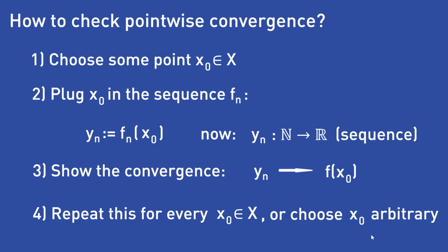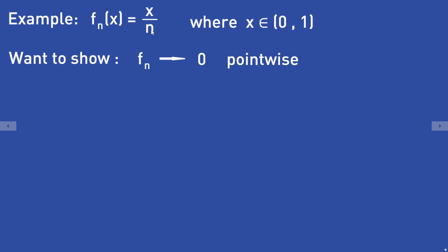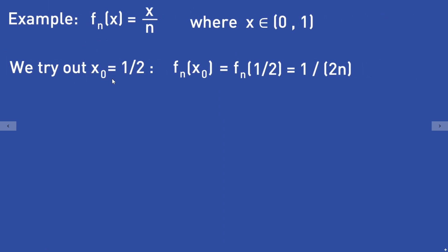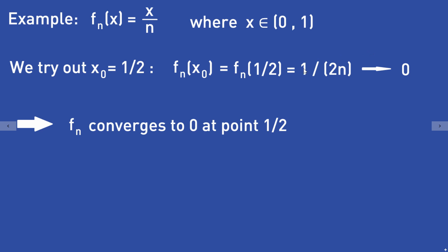Let's take a look at an easy example. Let fn = x/n for x in the interval [0, 1]. We want to show that fn converges to 0 pointwise. First, we try the point x₀ = 1/2. We plug x₀ into fn: fn(1/2) = 1/(2n). This is a sequence in the real numbers, and the sequence 1/(2n) converges to 0. So we have shown that fn converges to 0 at the point 1/2.